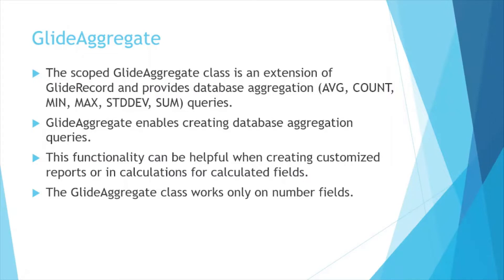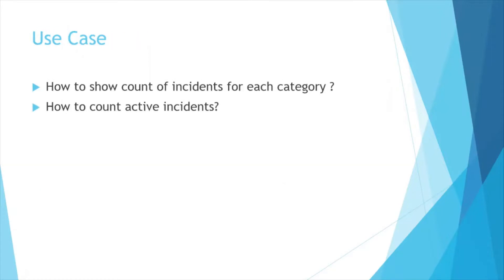You can also use gs.rowCount as part of GlideRecord, but that is not recommended. Whenever we have to do this kind of operation, we should go with GlideAggregate. This functionality can be very helpful when you are creating a customized report or doing any calculation for a calculated field. One important thing to always remember: GlideAggregate only works for number fields, because we cannot do sum or count on a string or any other field type.